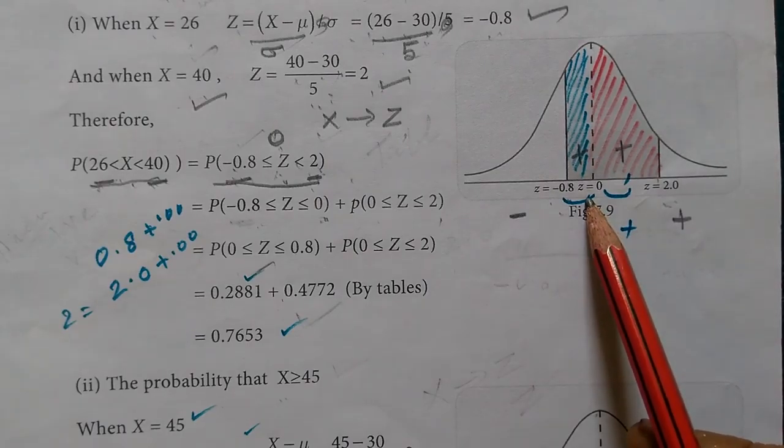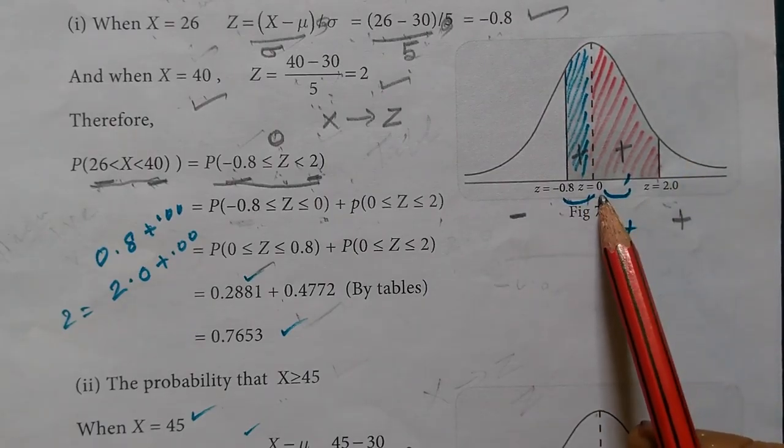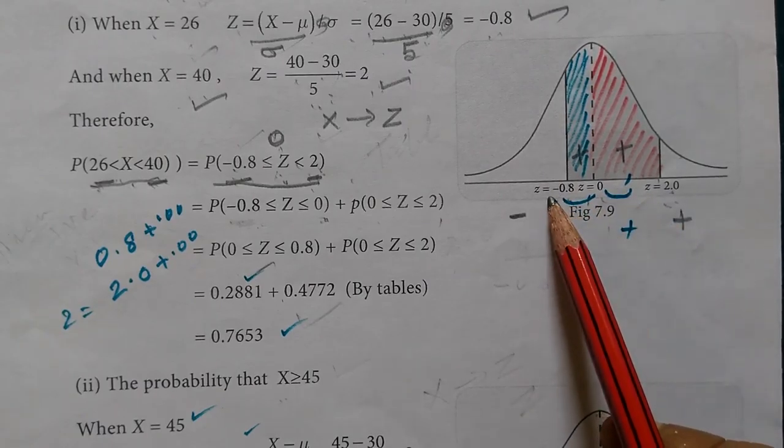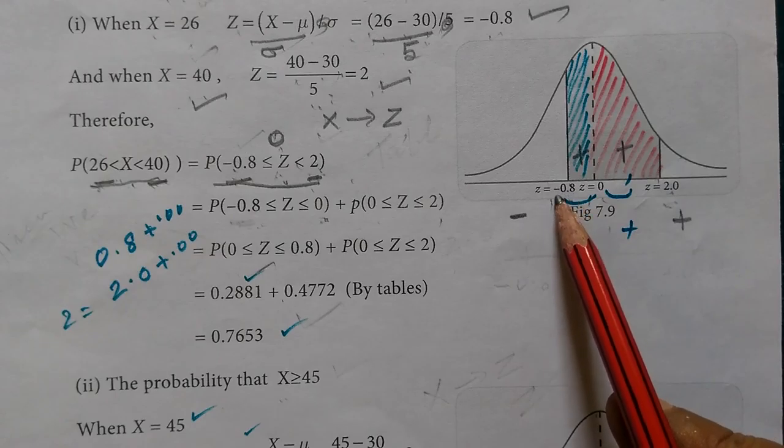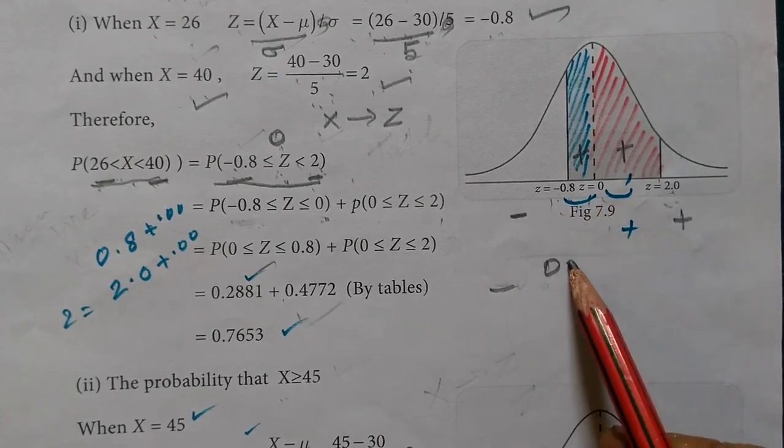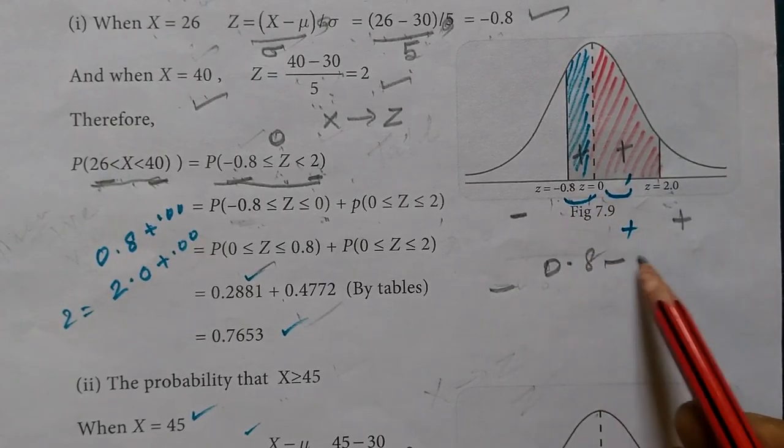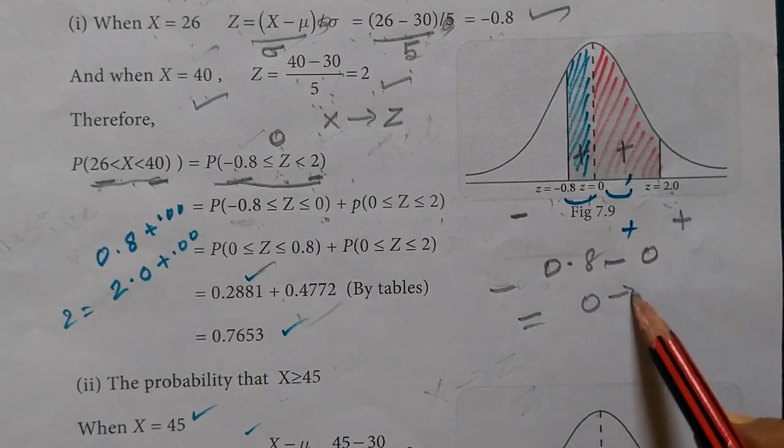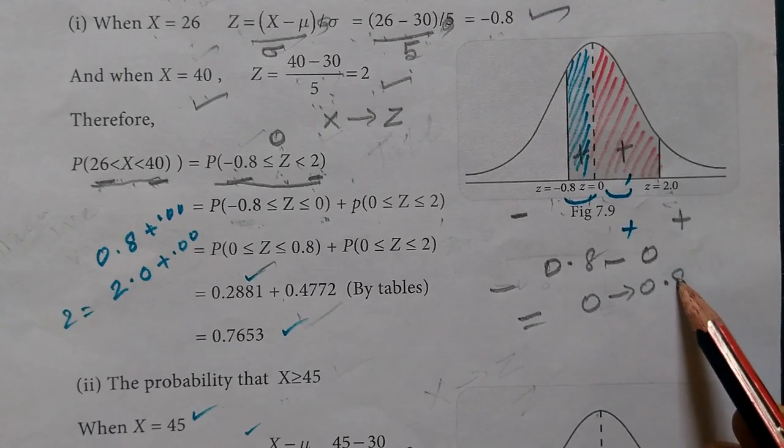This equals P(minus 0.8 < Z < 0) plus P(0 < Z < 2). Using symmetry, P(minus 0.8 < Z < 0) equals P(0 < Z < 0.8).